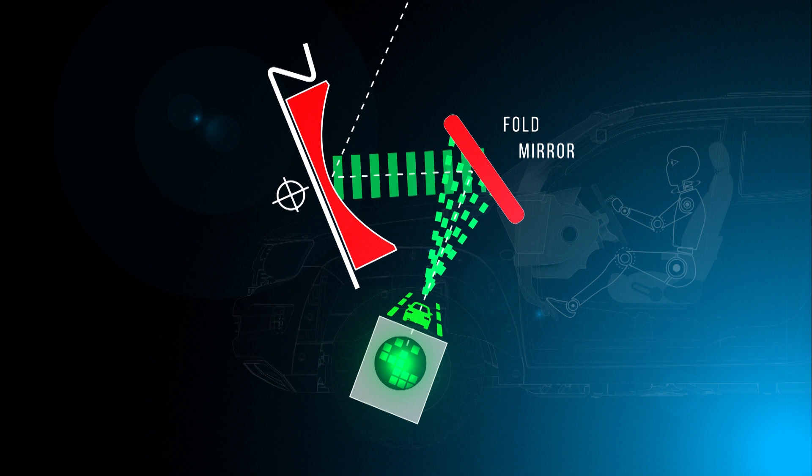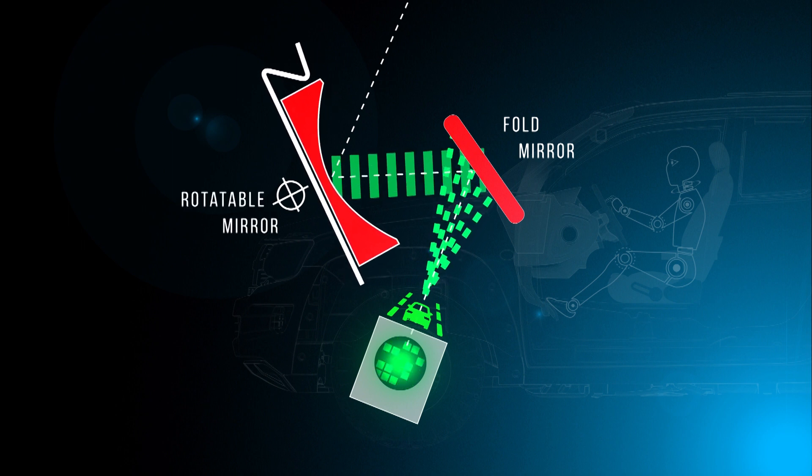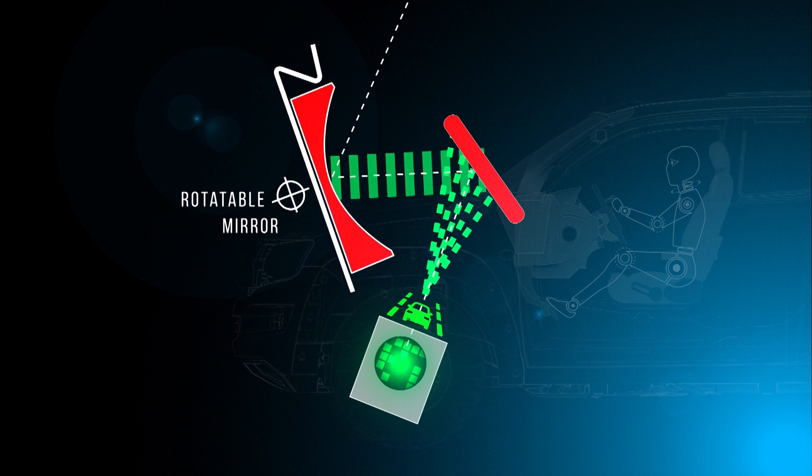The fold mirror then deflects the light rays towards a second mirror. Crucially, this one is rotatable to allow for adjustments in the height and size of the projection for different drivers.